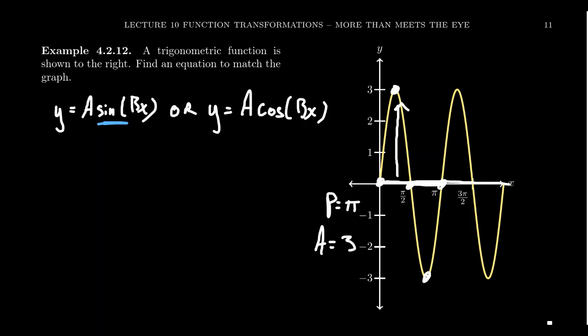So are there any reflections going on? Well, no. Sine starts off by going up. So there's no reflection. So the reflection is now banned. No reflections are allowed on this graph. And so with the information we have, we can come up with a formula, right? We get y equals 3 sine of b. Well, we don't know what b is.